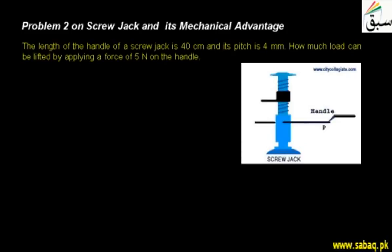First of all, let's collect data from it which we can solve. What is given in the data? We have the length of the handle of the screw jack, R, which is 40 cm in this case. The pitch of the screw bar is h, which represents the pitch and it is 4 mm. How much load can be lifted? Then you have to find out the load by applying a force of 5 N.